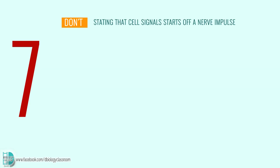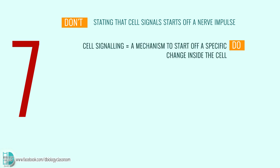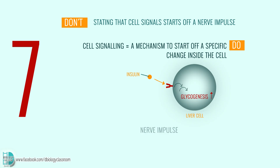Number 7: stating that cell signals start off a nerve impulse. Cell signaling is a mechanism to start off a specific change inside the cell. For example, insulin is a signal molecule that stimulates the liver cells to increase the rate of glycogenesis. A nerve impulse is started off by a stimulus.